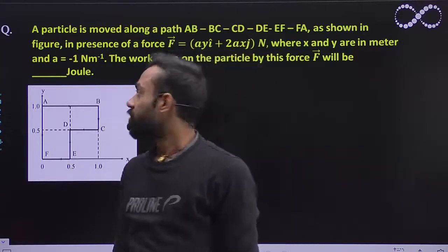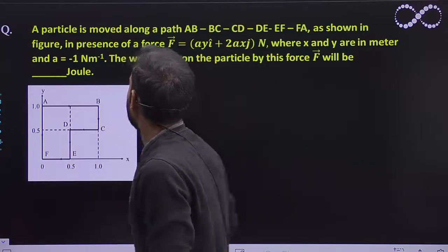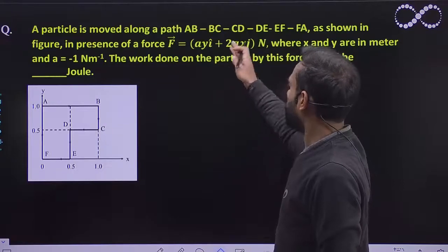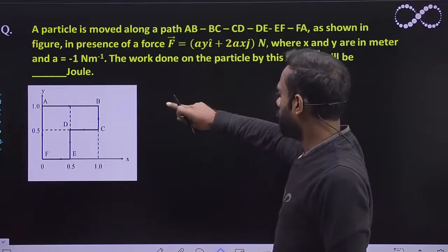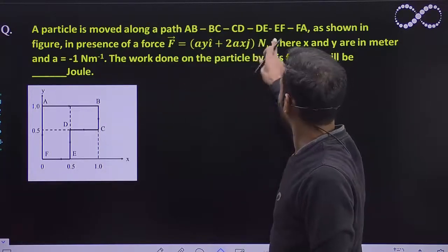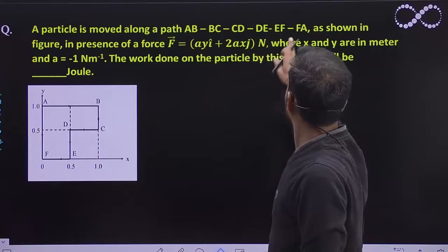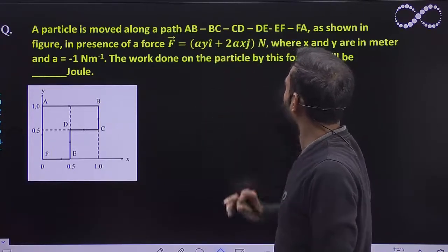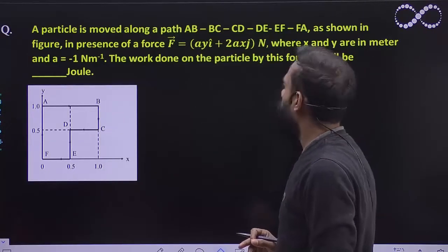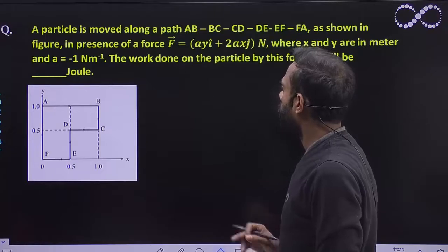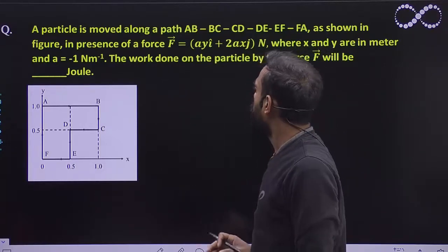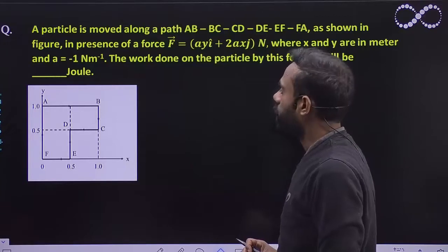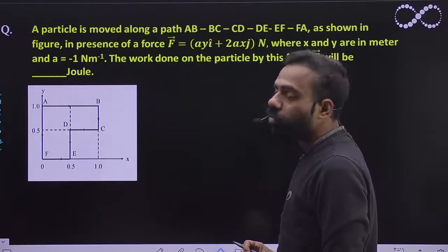Hello students! Let us see this question. A particle is moved along a path given from A to B, B to C, C to D, D to E, E to F, and F to A as shown in the figure. In the presence of force F, X and Y are in meters and the value of A is given. We have to find the work done on the particle by this force F.